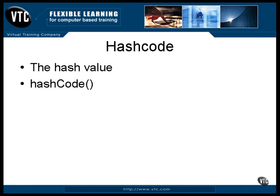You may need, or you may decide that you need, to override the existing hashCode method. For one thing, it's a rule that two objects that are equal have equal hash code values. If your class overrides the equals method, it should also override the hashCode method. When you implement your hashCode, any field not used for comparison by the equals method should not be included in the calculation of the hash code.